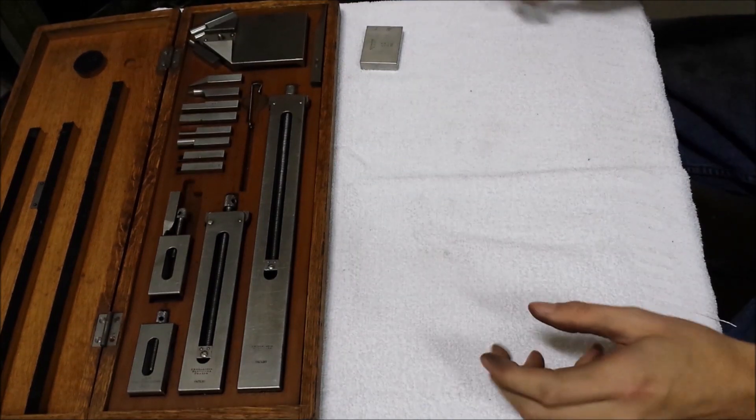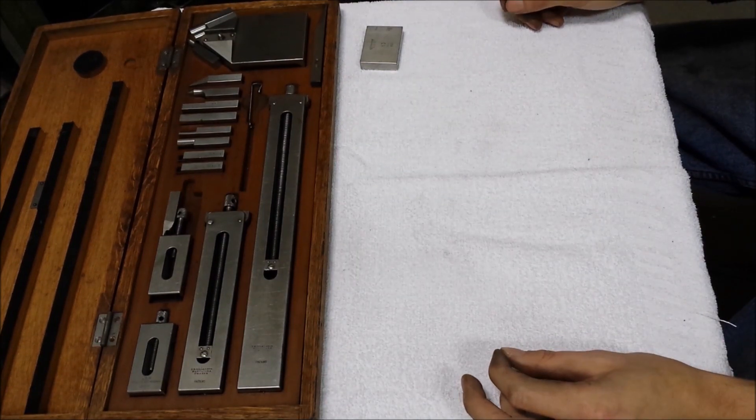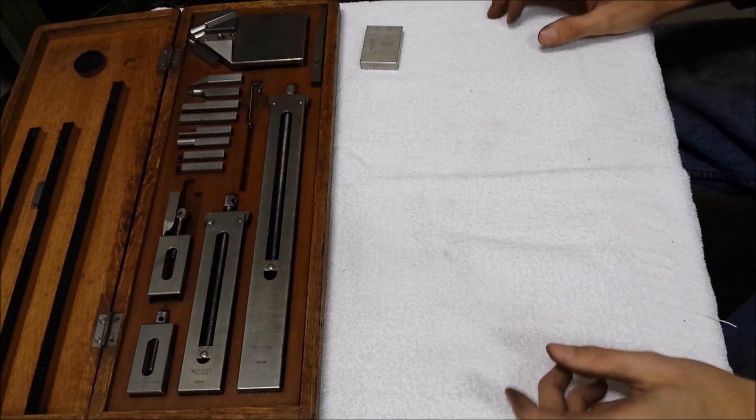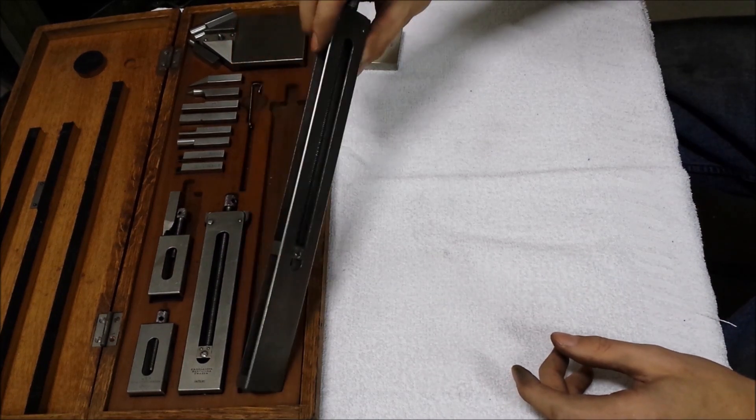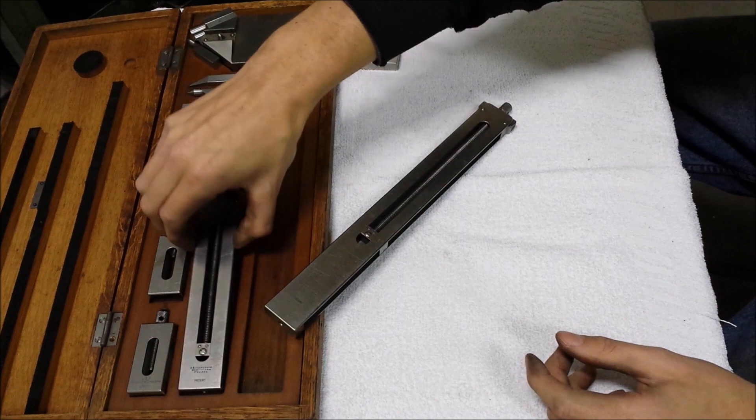If you've seen my other video on the special CAU-1s on micrometer, you'll recognize these things, the gauge block holders.